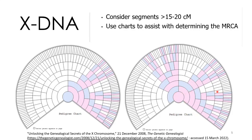Not every single rectangle in this chart has an area where DNA has been passed on. If you follow along with an X chromosome, you can use this chart to see exactly which ancestors you may have inherited segments of an X chromosome from.